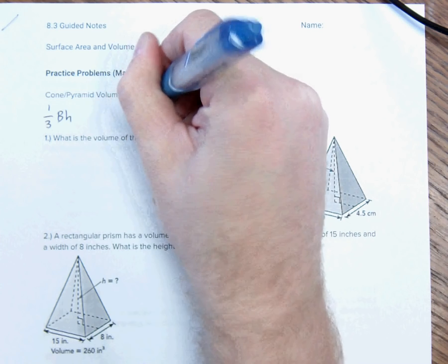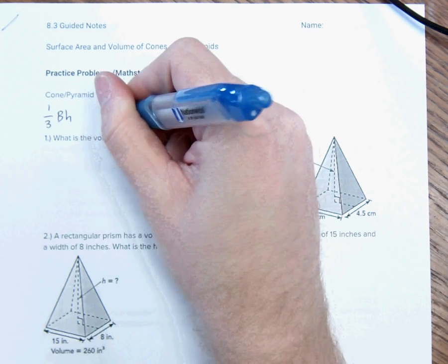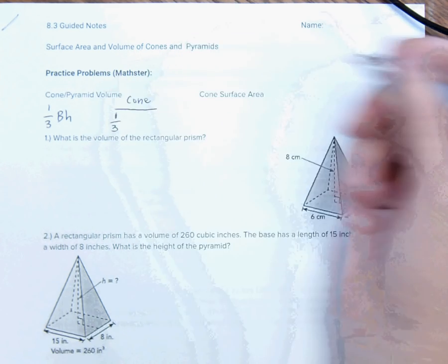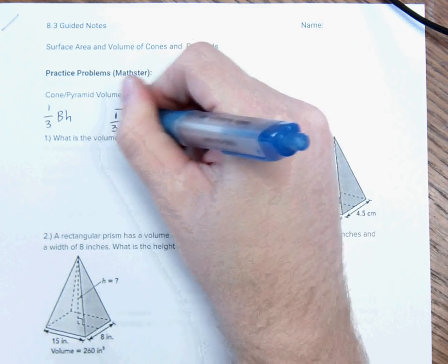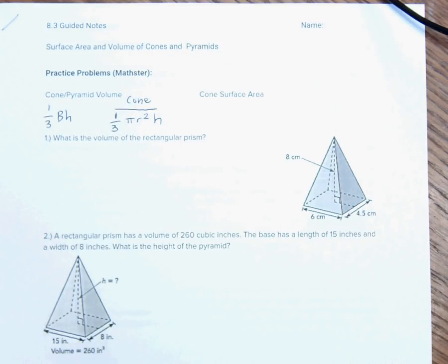Cone is what we're really worried about. The area of the base of a cone is a circle, so it's one-third pi r squared times the height. So, that's the big one for cone.